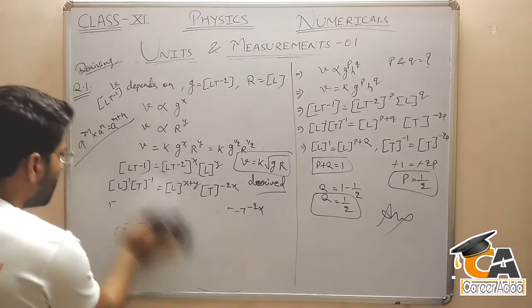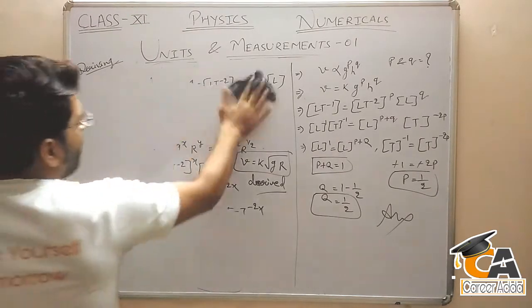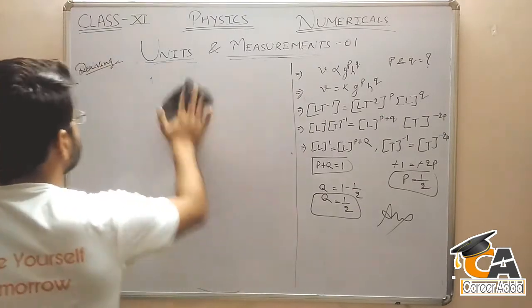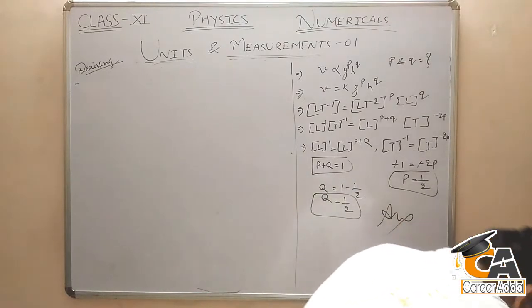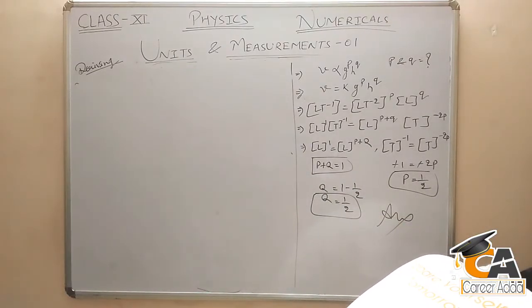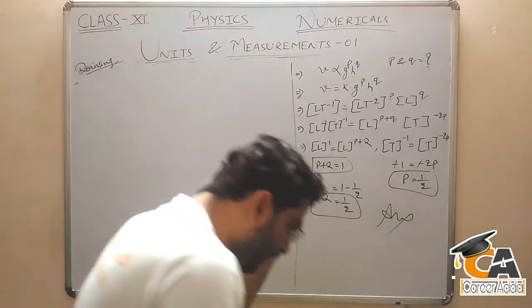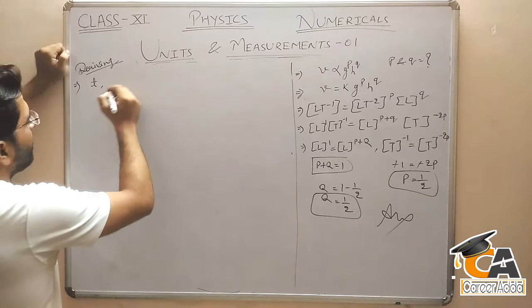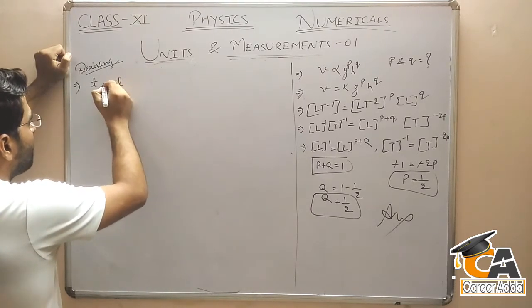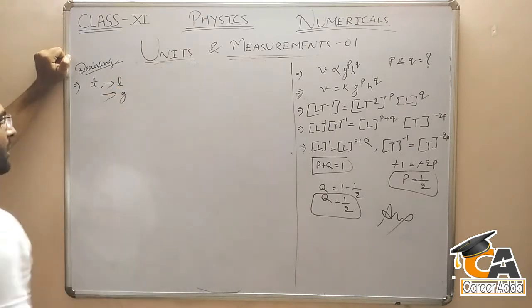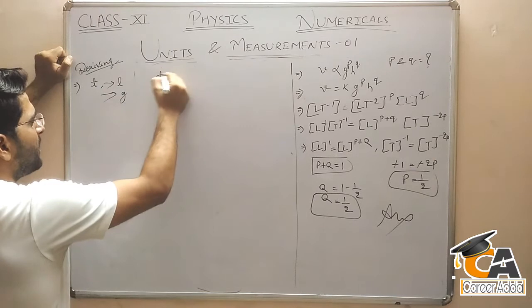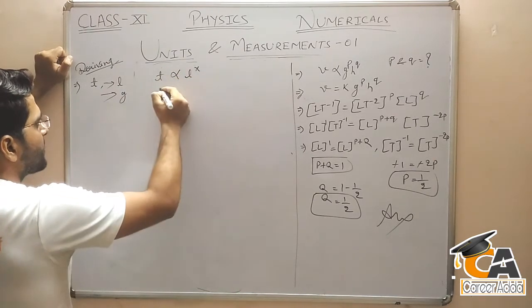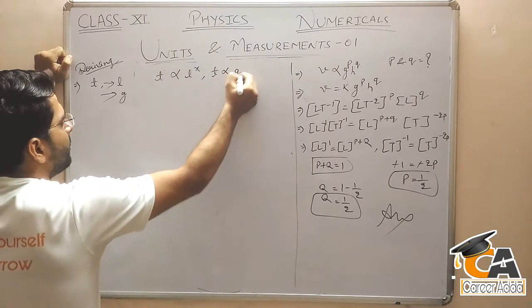जल्दी से note करो बच्चो। Next question: Consider a simple pendulum. The period of oscillation of the simple pendulum depends on its length and acceleration due to gravity. Write the expression for its time period. Simple pendulum में time period का formula derive करना है। T is proportional to L to the power X and T is proportional to G to the power Y.